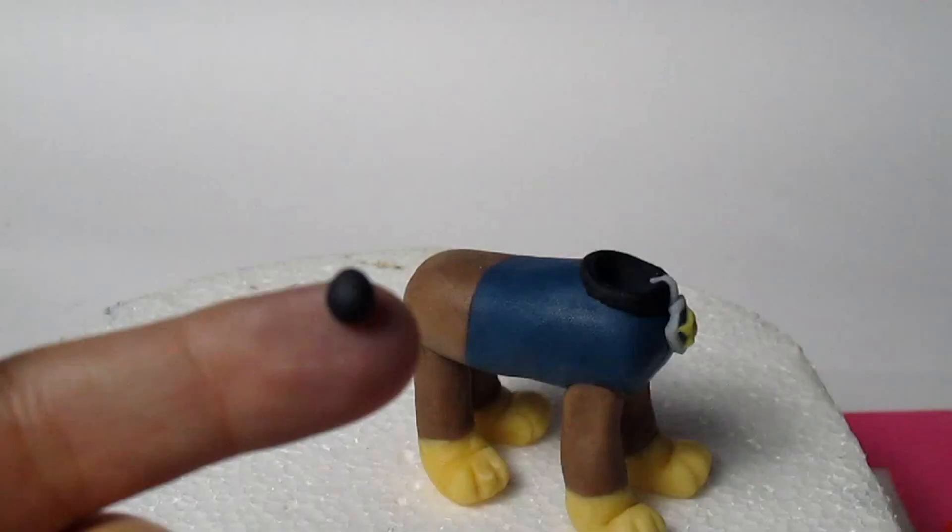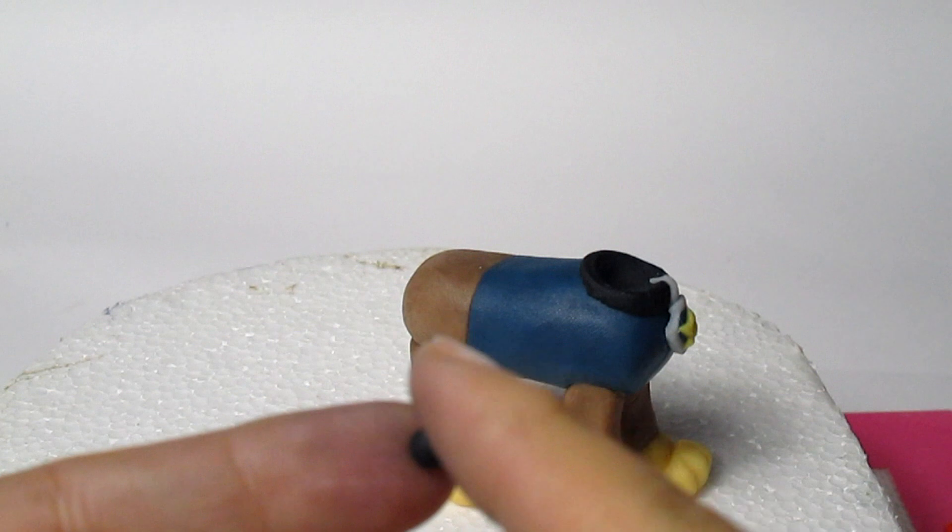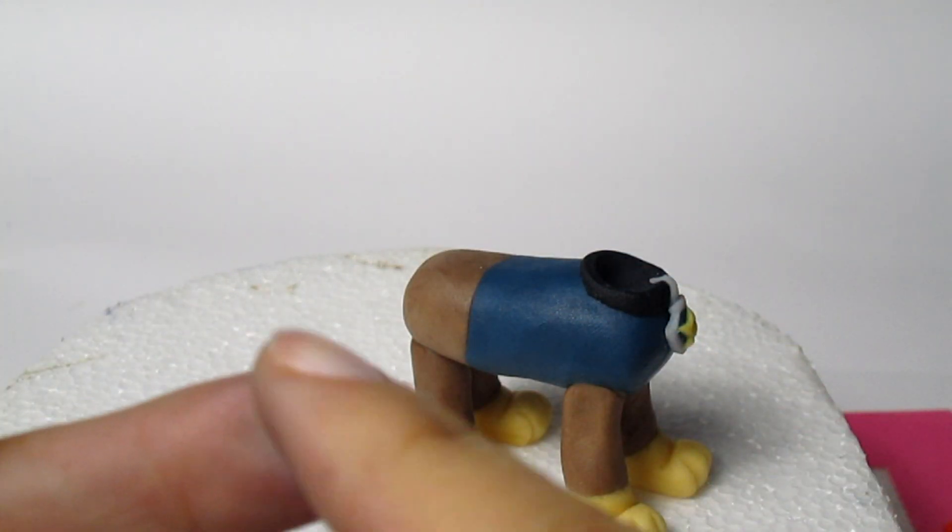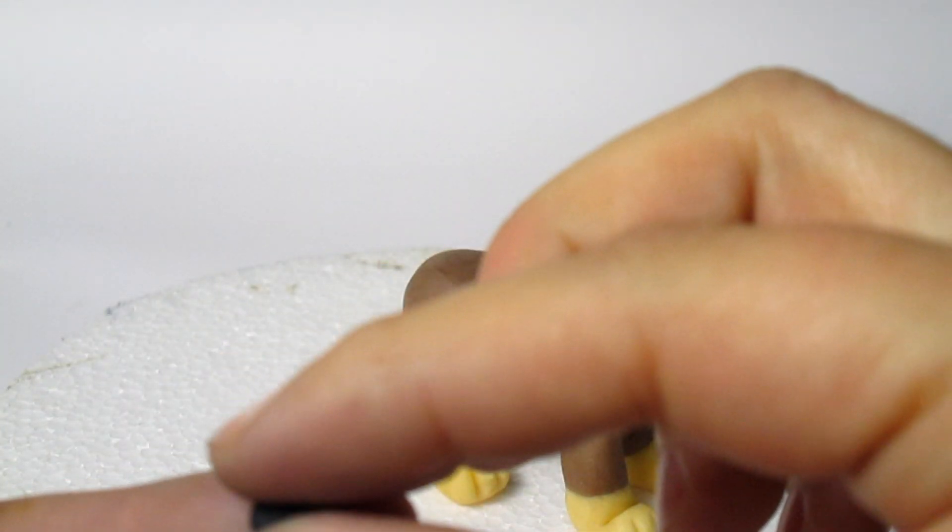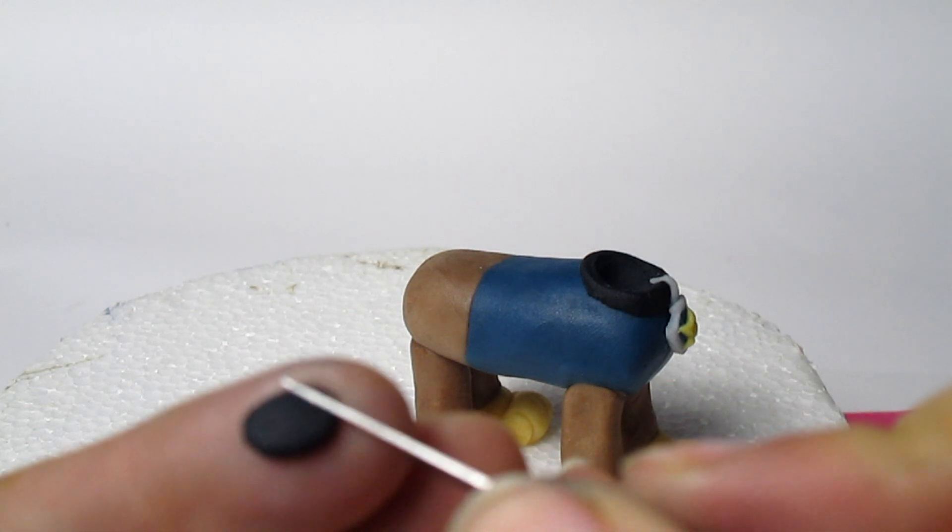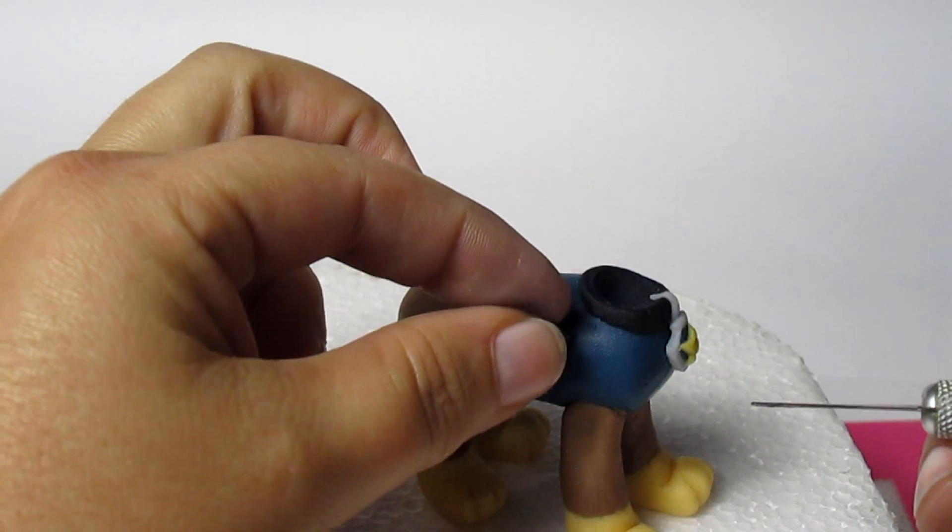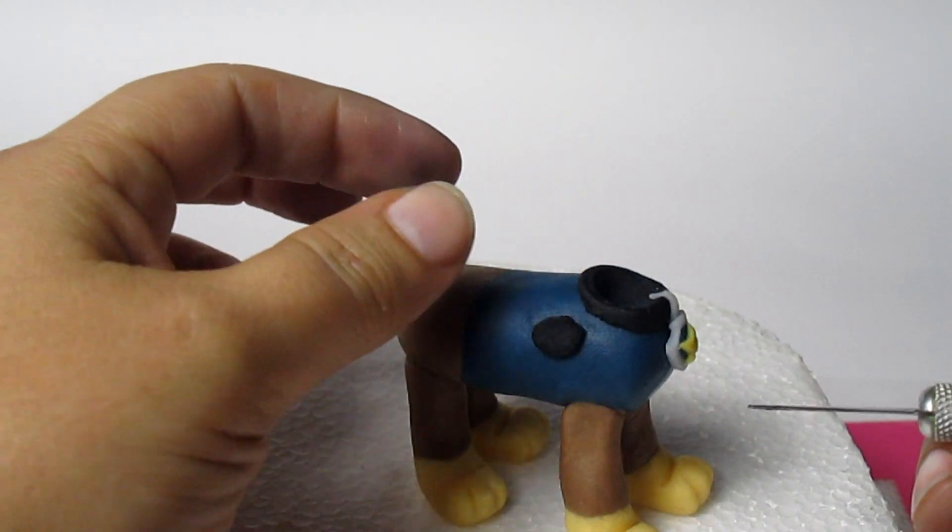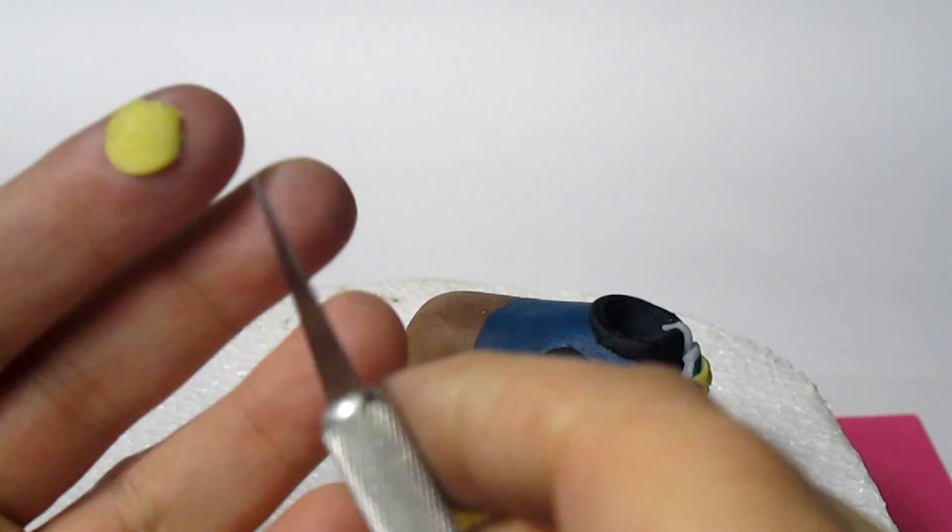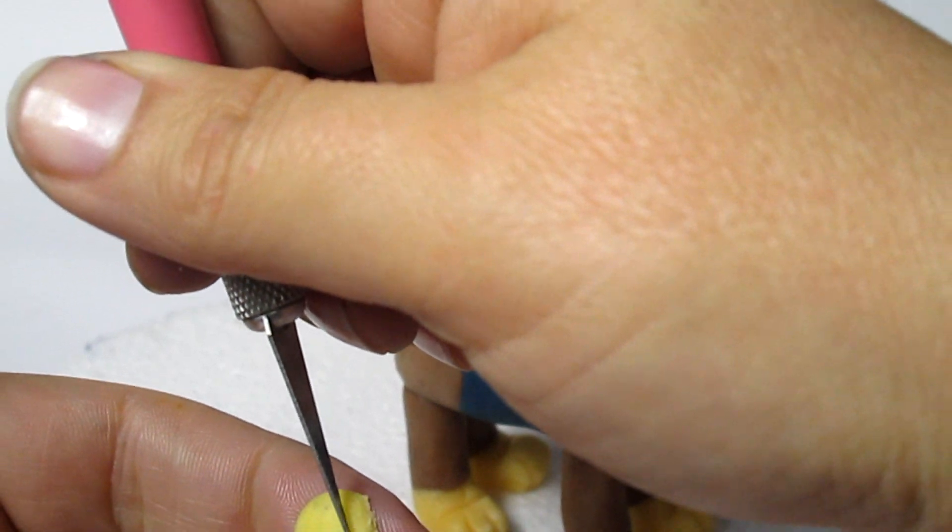I do the same thing with the side badge because it's very small. So first of all, I place an oval of black fondant, cut the sides, and then I'll apply some yellow fondant and try to match the badge as much as possible.